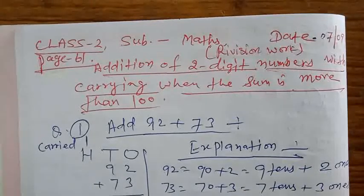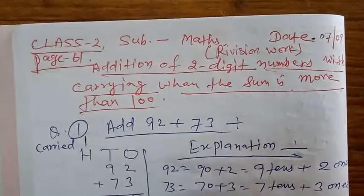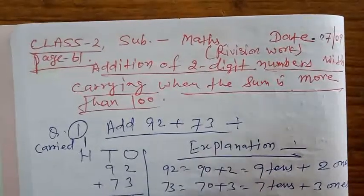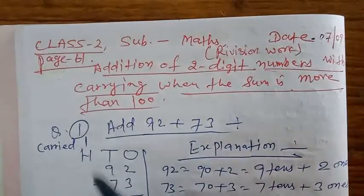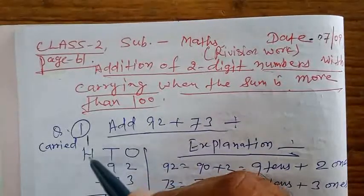Write 5 in the ones place. Now, in step 2, add the tens: 9 plus 7 equals 16. Write 6, carry 1. One becomes 100.